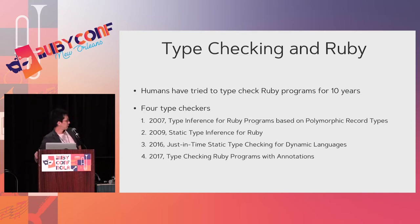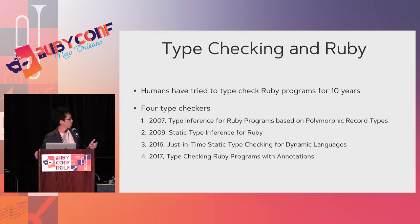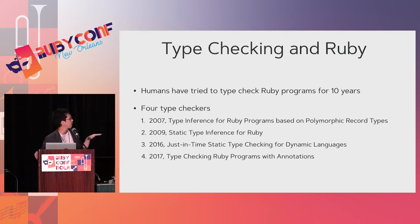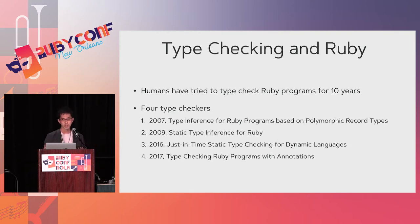Here is a short summary of type checking for Ruby. Humans have tried to type check Ruby programs for about 10 years. I list here four type checking tools developed by some researchers and students, including me. The first generation starts around 2007 or 2009, focusing on typing objects in Ruby — meaning duck typing.